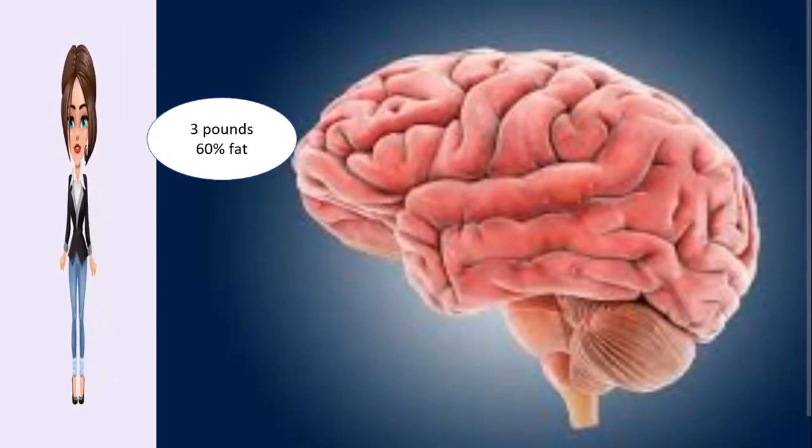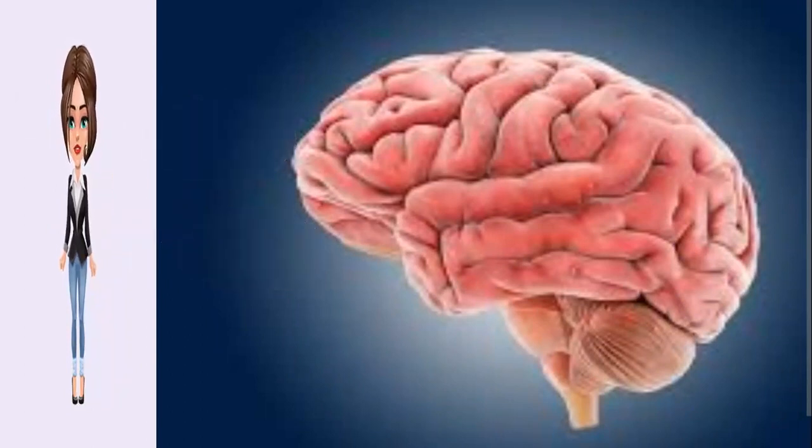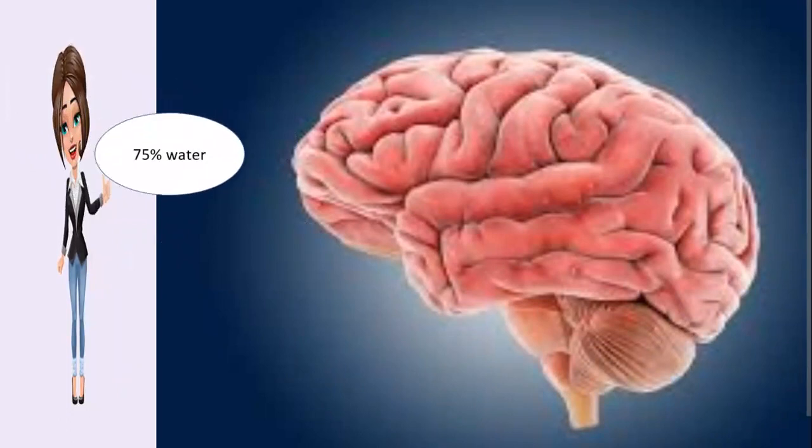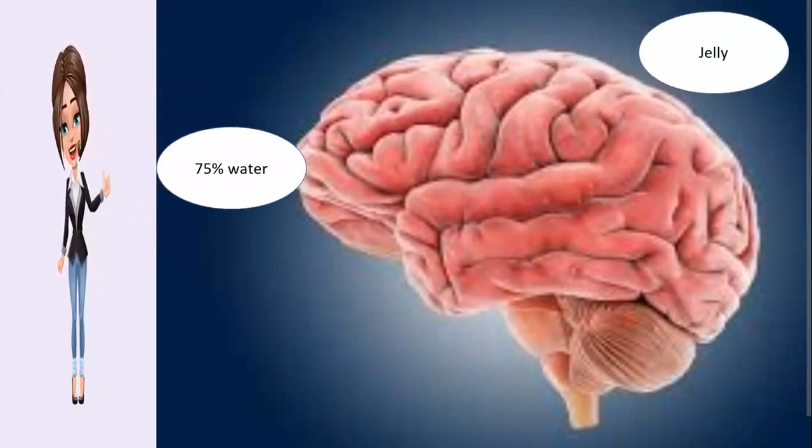Do you know what color is the human brain? The brain is pinkish greyish color. The brain is made up of 75% water. The texture of the brain is like a firm gel.